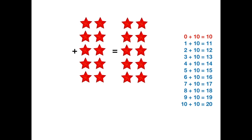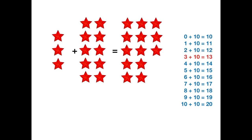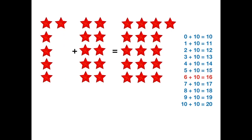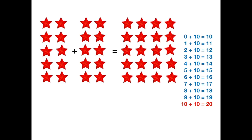Adding 10 to a number. 0 plus 10 equals 10. 1 plus 10 equals 11. 2 plus 10 equals 12. 3 plus 10 equals 13. 4 plus 10 equals 14. 5 plus 10 equals 15. 6 plus 10 equals 16. 7 plus 10 equals 17. 8 plus 10 equals 18. 9 plus 10 equals 19. 10 plus 10 equals 20. And we are all done.